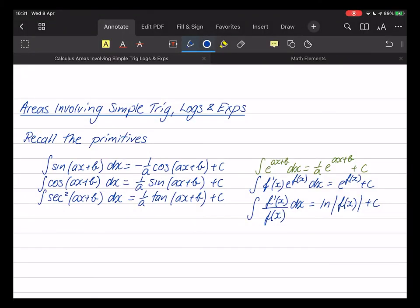Finding areas involving simple trig, log, and exponential functions. Previously, you've looked at all the primitives listed here: finding the primitives of sin, cos, and sec squared, of the exponential, and if you had this type of expression where the top is the derivative of the bottom, we understood that would give us a log function. So now, you will be required to use any of these to calculate an area or to calculate a definite integral.